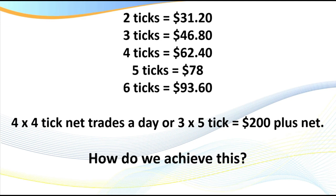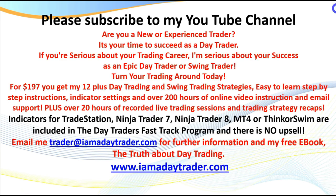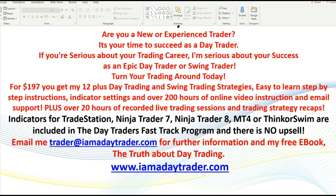So that's our goal: $200 a day net. How do we do that with the 10-year note? A tick value is approximately $15.60, so two ticks is $31, four ticks is $62. If we average a net of just three five-tick trades a day, that's $200 net or more. So how do we achieve that? Let's go and have a look at the charts.